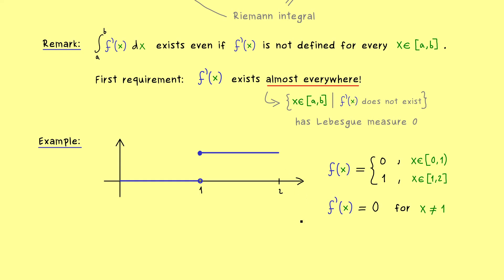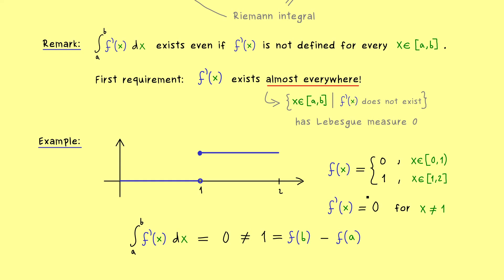For this function f, we can check both sides of the fundamental theorem of calculus. The left-hand side is really simple: we just integrate the zero function, so the integral is definitely 0. But the right-hand side gives us f(b) minus f(a) = 1, which is not equal to 0. Hence for this function f, the fundamental theorem of calculus is not satisfied.